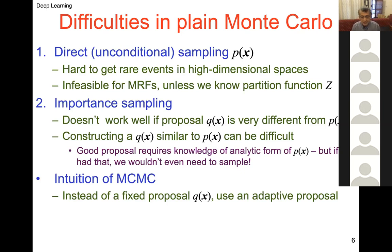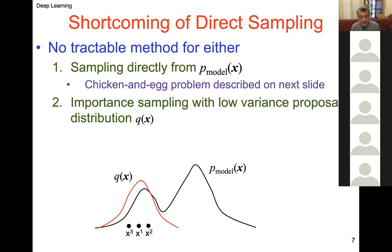The intuition of Markov Chain Monte Carlo is that instead of a fixed proposal Q(X), we use an adaptive proposal that we keep changing. Let's look at a simple example addressing the shortcoming of direct sampling. With direct sampling from P-model of X, there's the chicken-and-egg problem we just described. Important sampling with a low-variance proposal is difficult — that's when we say we need something more.